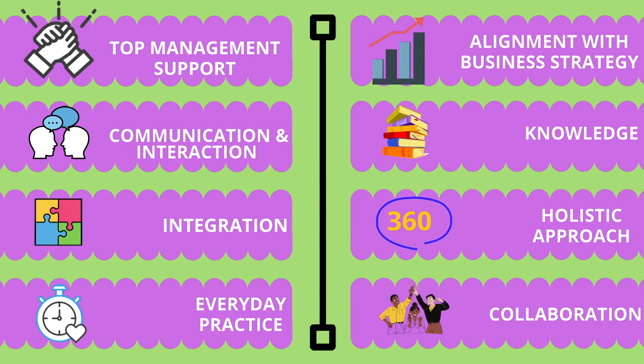The implementation of life cycle management can be successful with the participation of all levels of management in the organization. The eight critical success factors of life cycle management are: top management support, communication and interaction, integration across functions, practice as part of everyday work, alignment with business strategy, knowledge of life cycle management, holistic environmental approach, and collaboration of product chain actors.